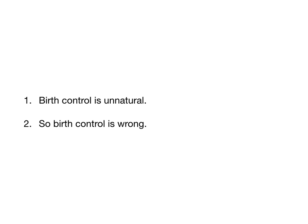Let's look at an argument that is an enthymeme — one that very clearly has a missing premise. "Birth control is unnatural, so birth control is wrong." Logic and validity are all about form, so let's look at the form of this argument: A is B, so A is C. Birth control is unnatural, so it is a thing that is morally wrong.